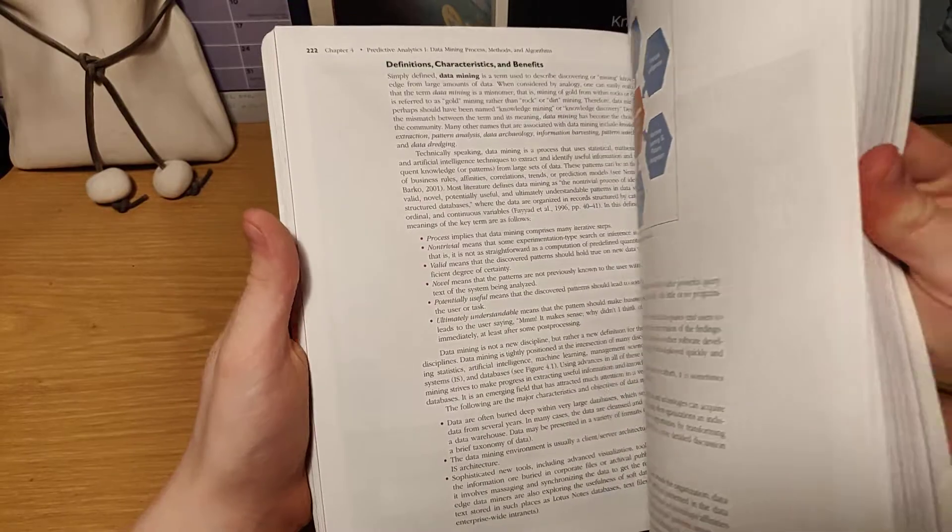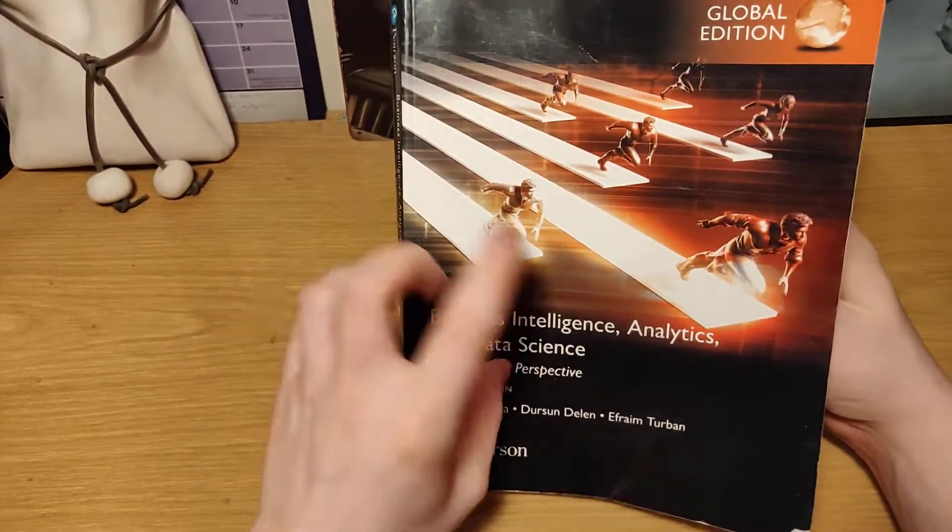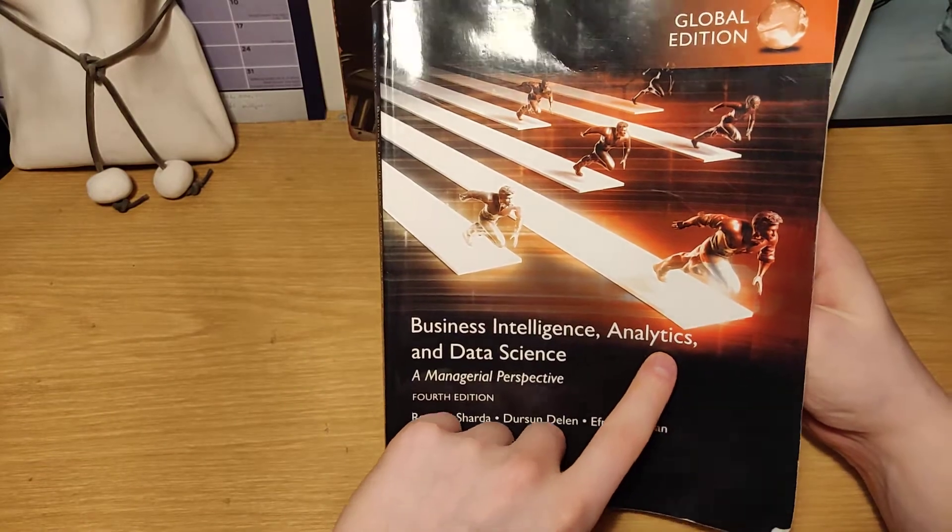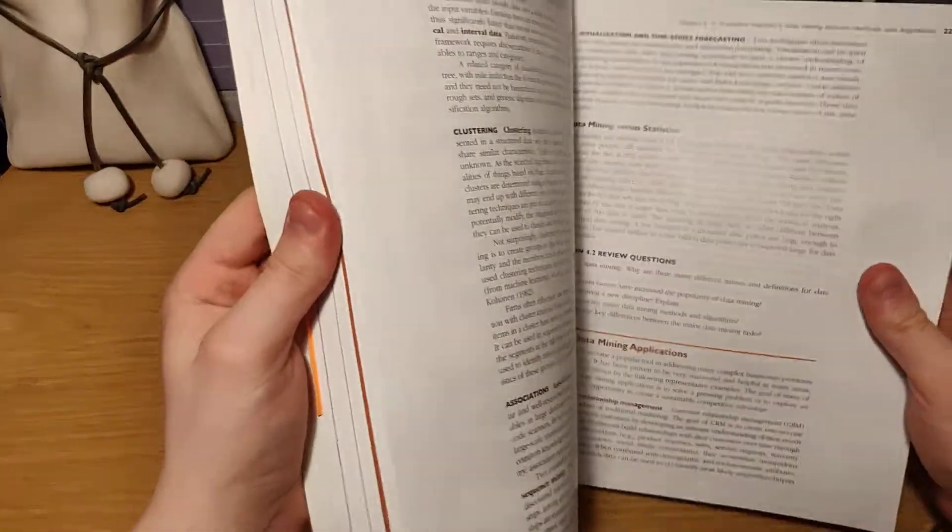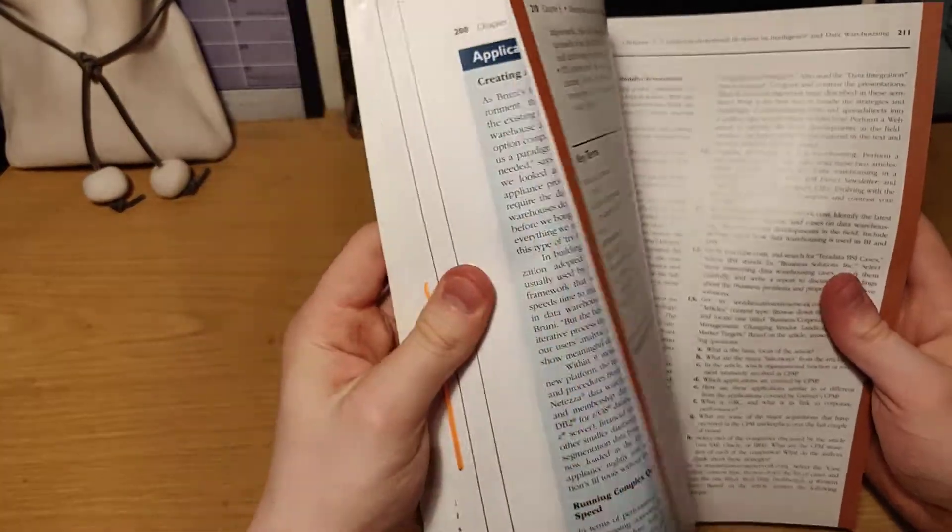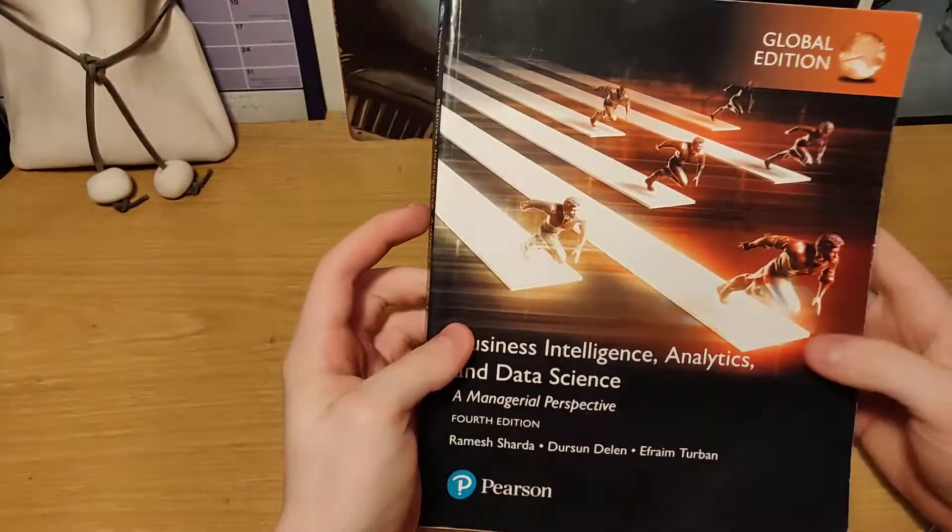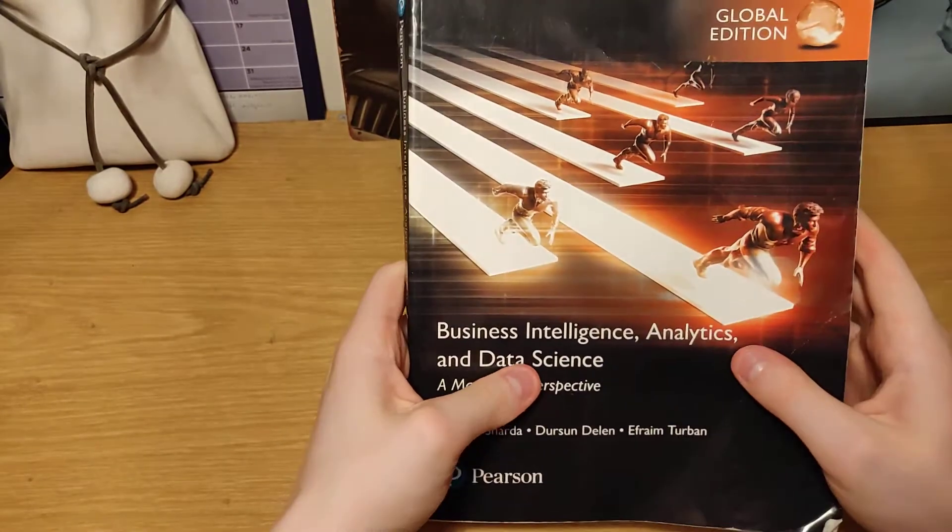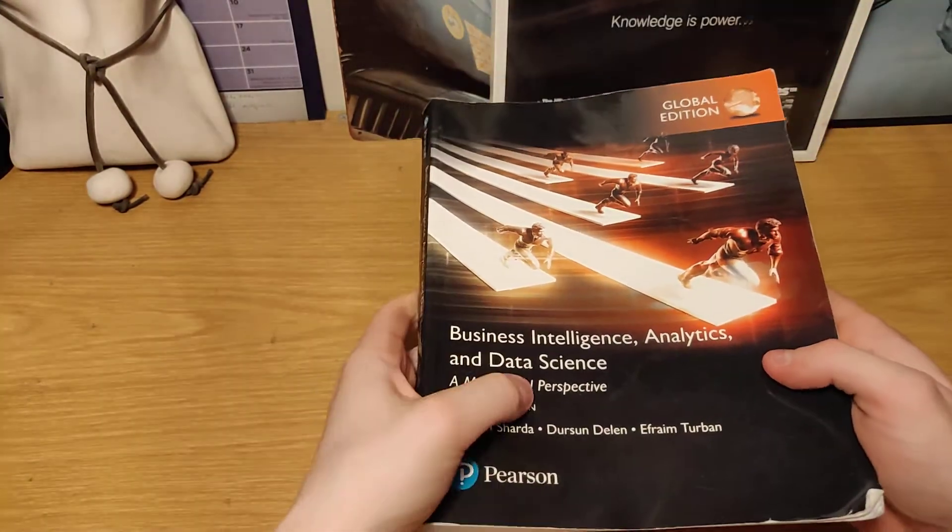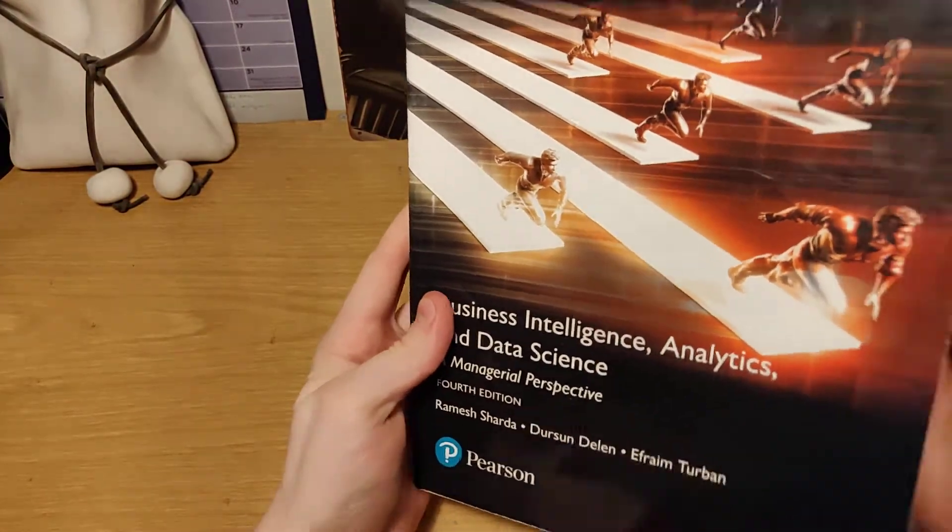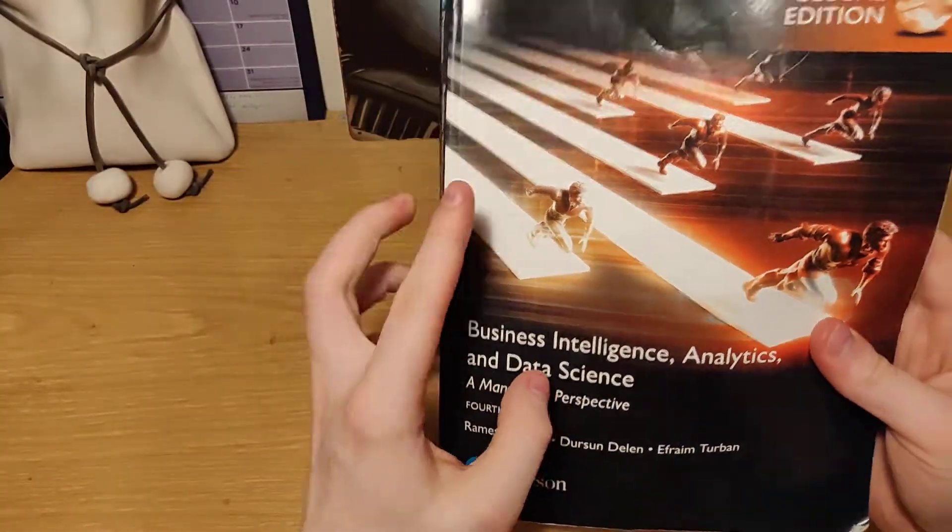This book is basically about what data science is, what business intelligence is and what analytics is, and it teaches you how to use everything, how to learn to predict data with machine learning, how to learn from your analytics, what's important, how to clean your data and just anything related to data science.